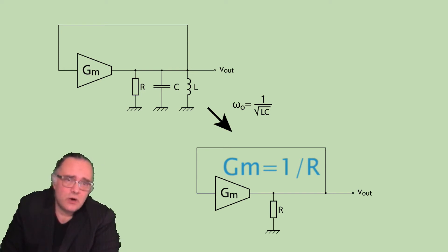If GM is equal to 1 over R we can guarantee that the input and the output of the transconductance stage are the same.